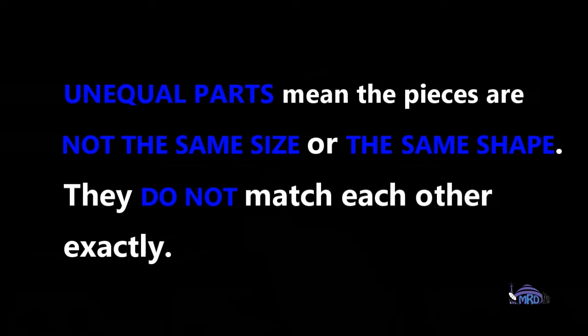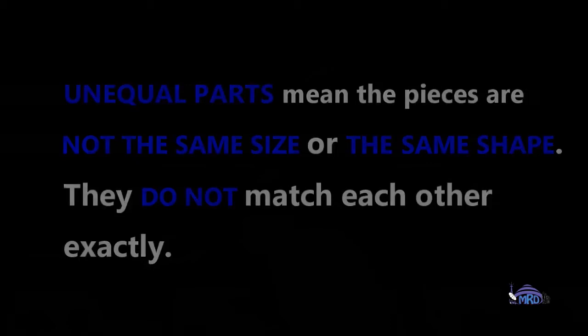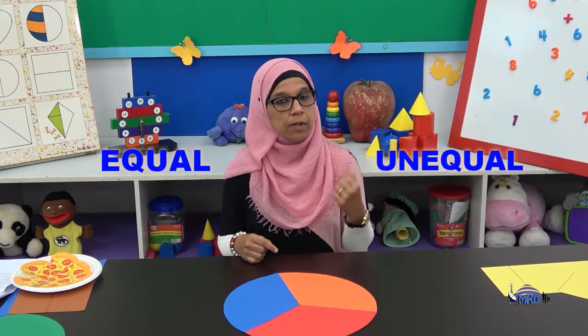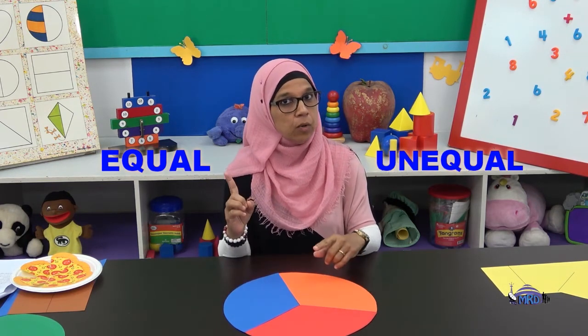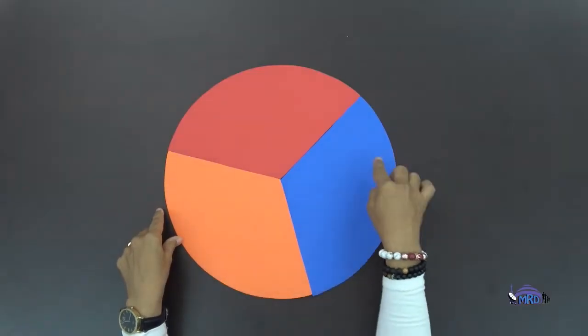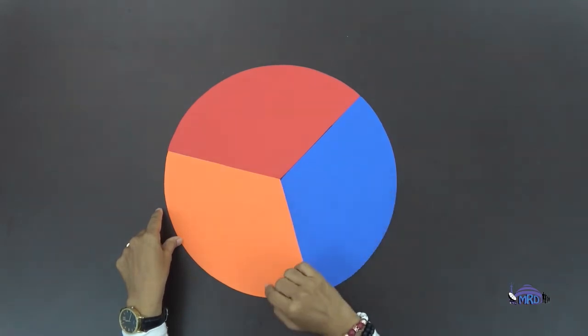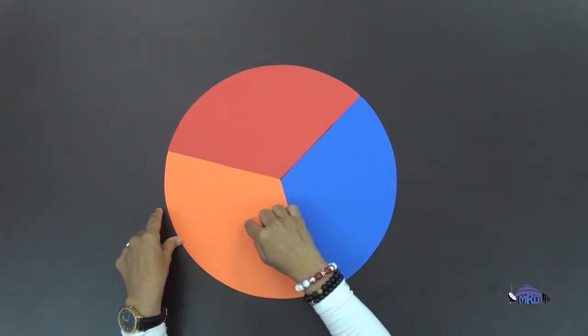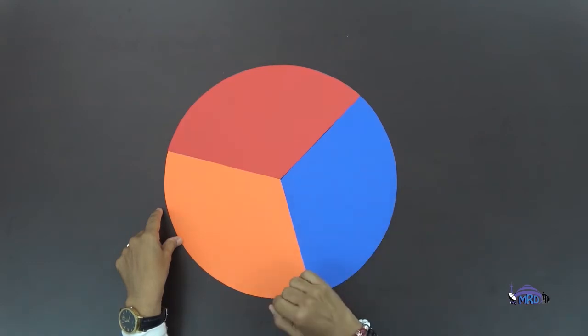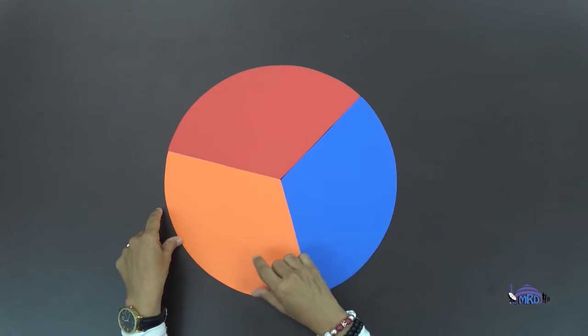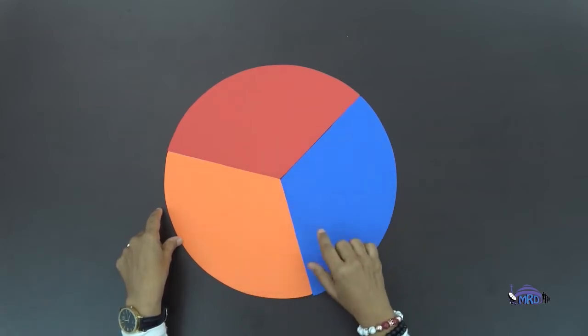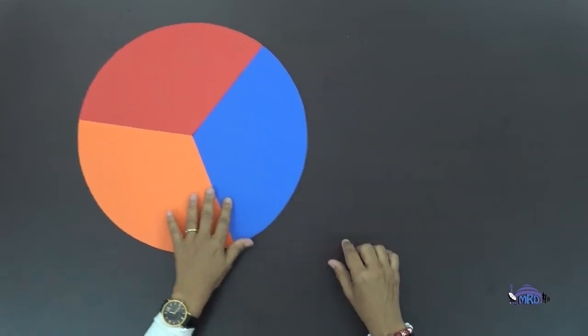Let's look at some shapes and objects and see if you can decide if it's equal or unequal. Let's look at this shape — it's a circle. It's separated into three pieces. Is each piece equal or unequal? What do you think? You're right — it's equal. Each piece is the same size, so it's equal.